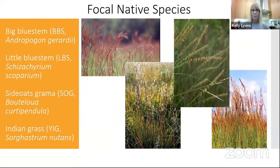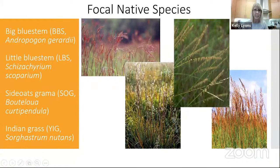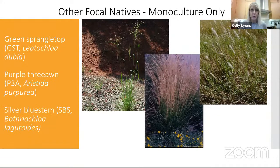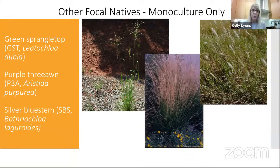The big four species we used were big bluestem (BBS), little bluestem (LBS), side oats grama (SOG), and yellow Indian grass (YIG). I also planted single-species plots of green sprangletop, purple threeawn, and silver bluestem. Green sprangletop is very early successional and kind of disappears, and purple threeawn isn't considered great forage. Silver bluestem I love because it's the same genus as KR bluestem and does out-compete KR under many circumstances, though it doesn't germinate very well for us.